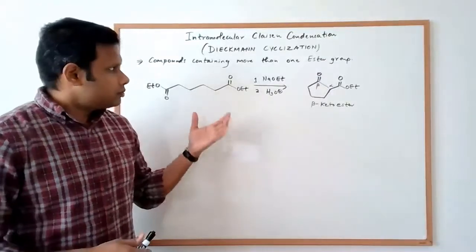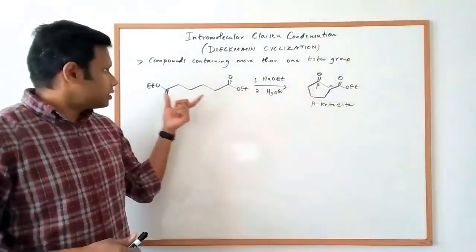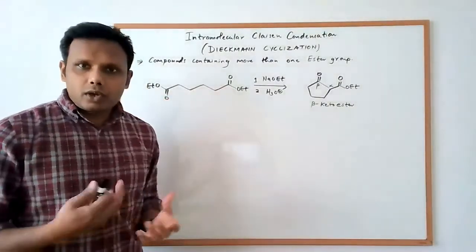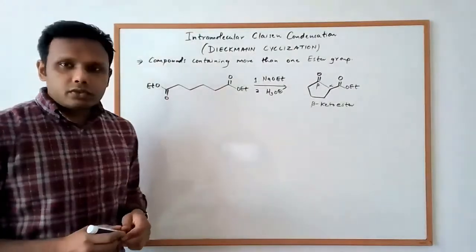Now what that also means is since we're talking about ester groups, these are usually at the ends of a carbon chain. So I have an example of a molecule here.